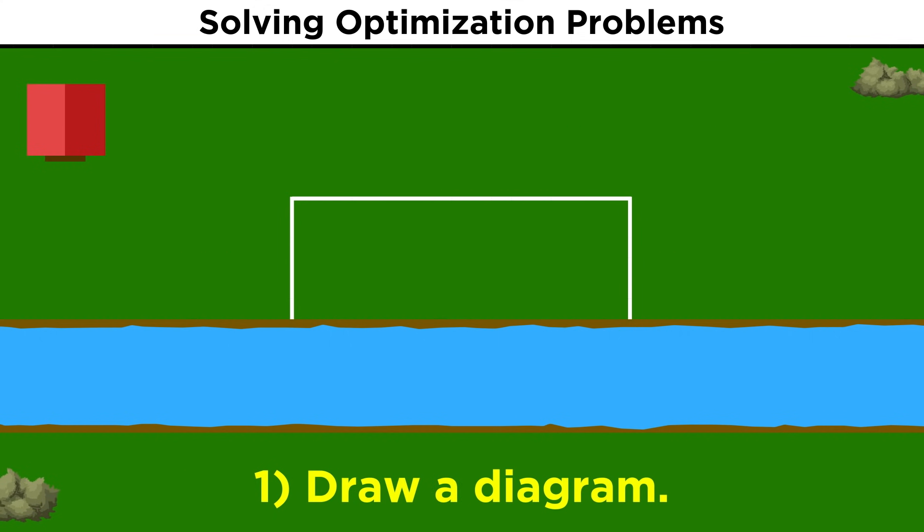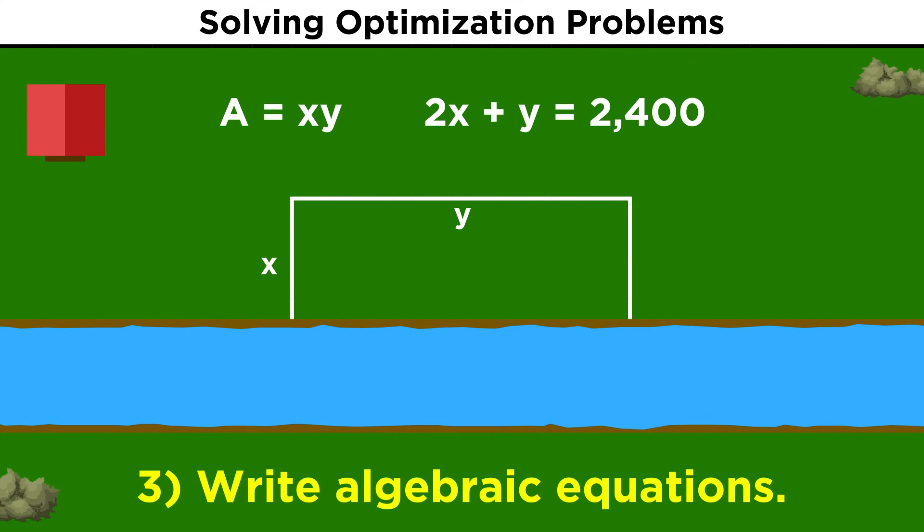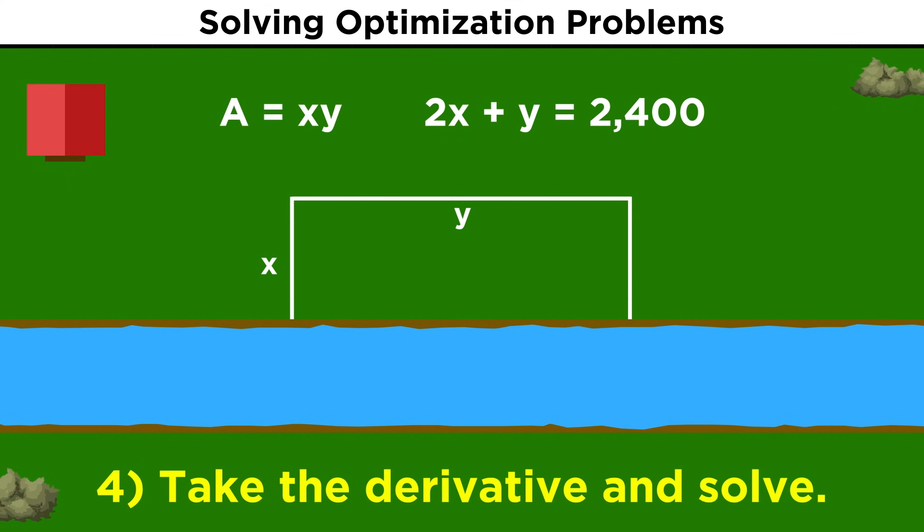All we had to do was draw a diagram, identify the unknown, or what we are trying to solve for, express this in terms of algebraic relationships, and then do calculus to find a maximum or minimum value.